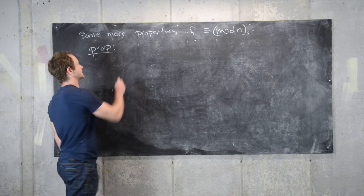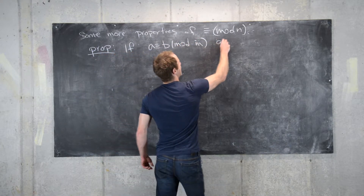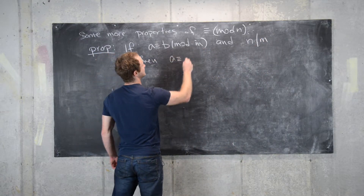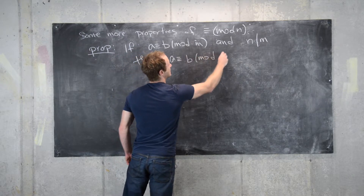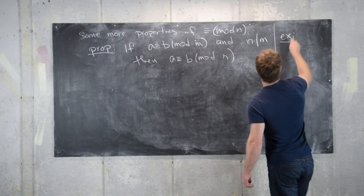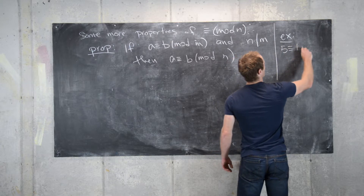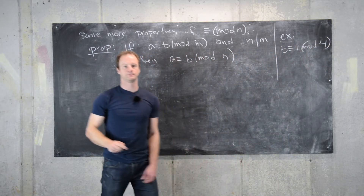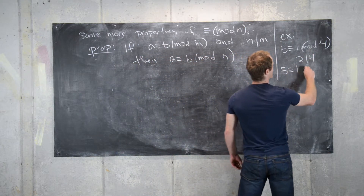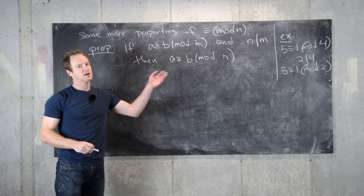The next proposition: if a is congruent to b mod m, and n divides m, then a is congruent to b mod n. For example, 5 is congruent to 1 modulo 4, and 2 divides 4, so 5 is congruent to 1 modulo 2 as well. You can generate many examples just as easily.